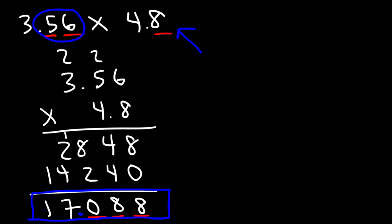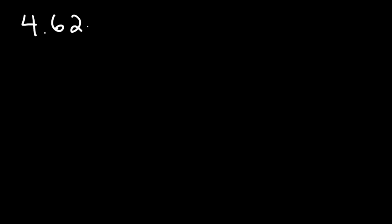And if you have a calculator, you can confirm it: 3.56 times 4.8 gives you 17.088. Now let's try another example: 4.62 times 3.84.